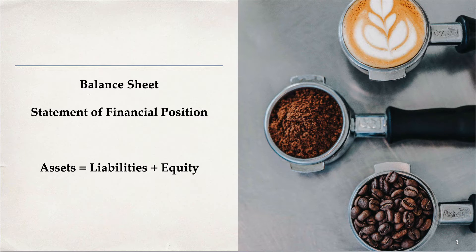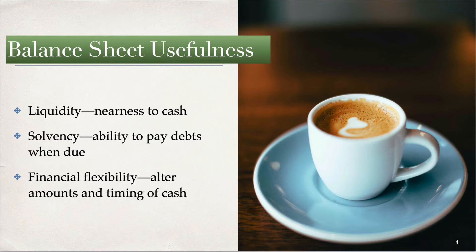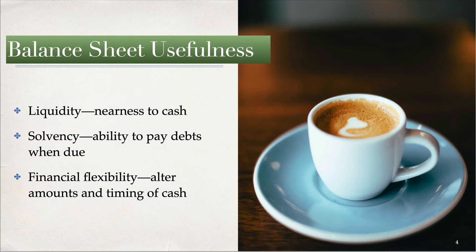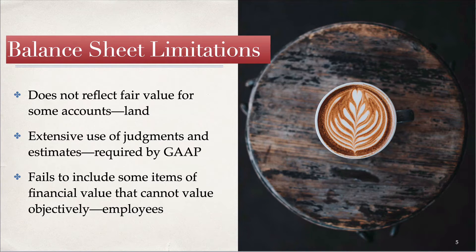Let's get started with the balance sheet. As you know, the balance sheet is sometimes called the statement of financial position, and assets have to equal liabilities plus equity — that's the accounting equation. The balance sheet is useful for things like liquidity, which is how near a company is to cash, and solvency, which is the ability for a company to pay its debts when due. It also gives insight into the financial flexibility of a company — the ability to alter the amount and timing of cash flows, whether you can speed up cash flows or delay cash payments.